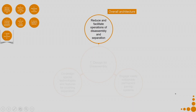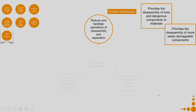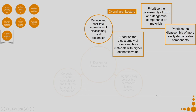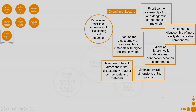At the overall architecture level: prioritize the disassembly of toxic and dangerous components first, prioritize the disassembly of more easily damageable components, prioritize the disassembly of components or materials with higher economic value, minimize hierarchically dependent connections between components, minimize different directions in the disassembly route, engage modular structures, divide the product into easily separable subassemblies, and increase the linearity of the disassembly route.